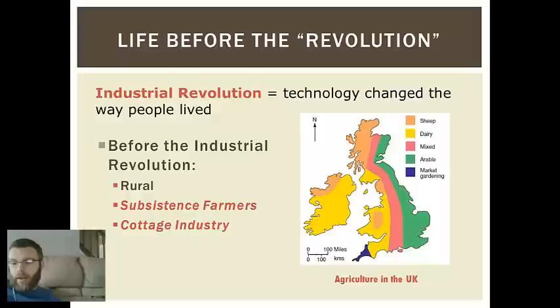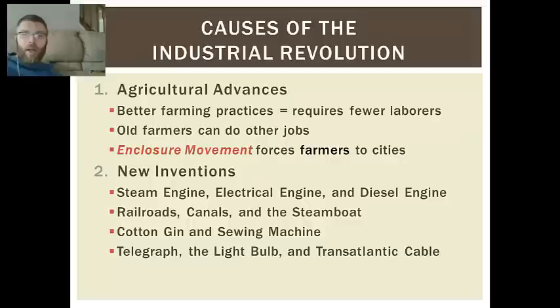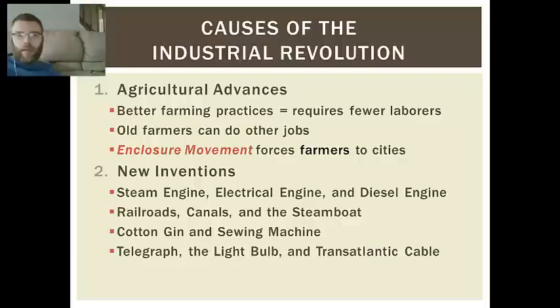The Industrial Revolution changed this — it changed the way that people live. Some causes. We have three major causes. One is agricultural advancements: better farming practices create the need for fewer laborers, fewer farmers. If you have a piece of machinery that can accomplish the job of four people and you only have one person working it, what are those other three people going to do? Those other three people who no longer have jobs are going to have to do something.